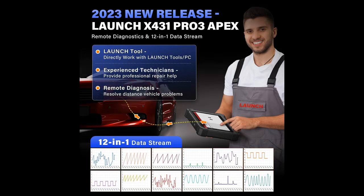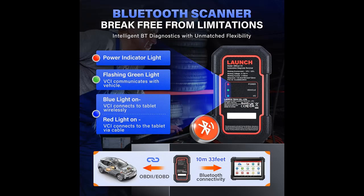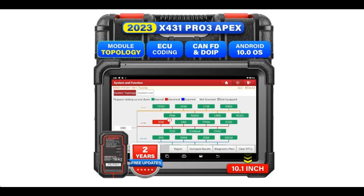Online and Offline ECU Coding Functions: the Launch X431 Scanner owns maximum control of ECU modules and meets more personalized needs. This includes flashing hidden functions, resetting adaptive data, replacing new modules, customizing OE settings, changing auto stop/start, modifying headlamps, adding courtesy lights, and more.